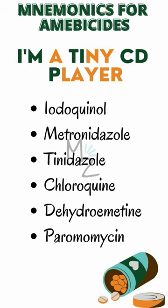I is for iodoquinol, M is for metronidazole, A is for amoebicides, then tiny is for tinidazole, then we've got CD — C is for chloroquine and D is for dehydroemetine. And finally, we've got P in the player, which is for paromomycin.